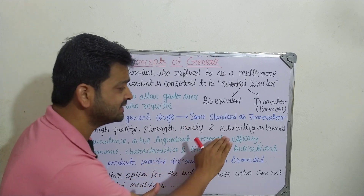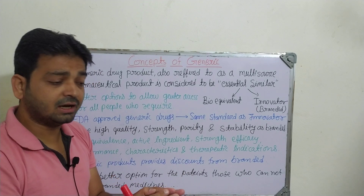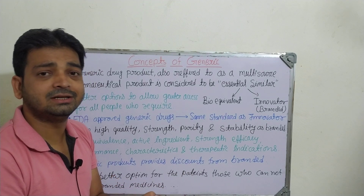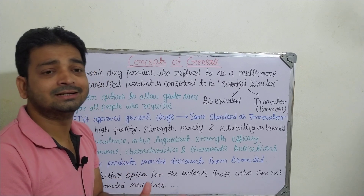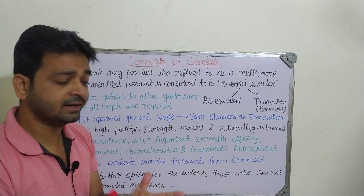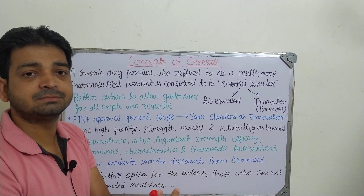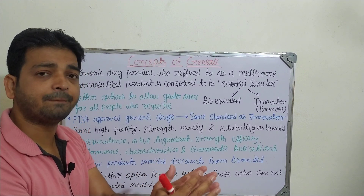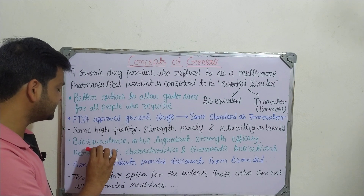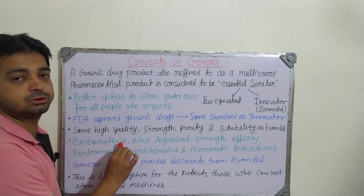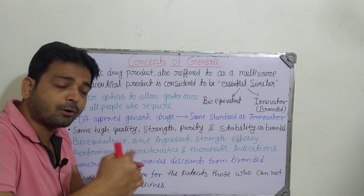Purity-wise, the generic drug should not compromise. Stability should also be as good as the branded drug — the content should not expire earlier than the branded product and should retain its properties until the end of consumption or until the expiration date. The next key parameter is bioequivalence.